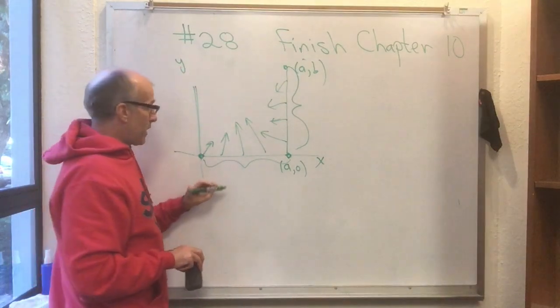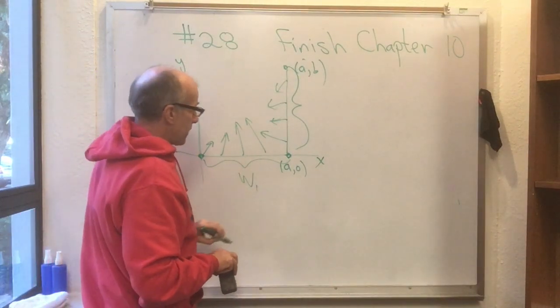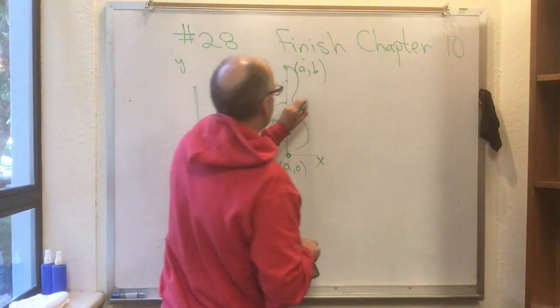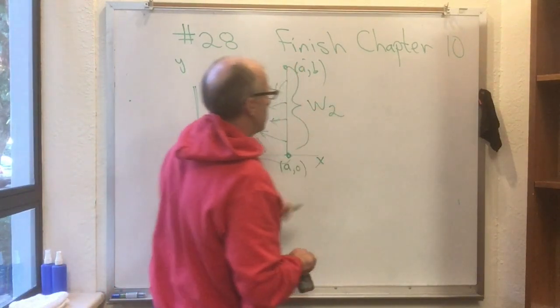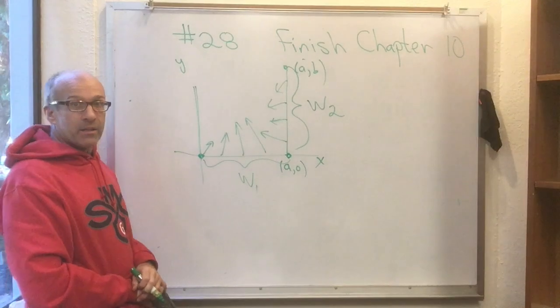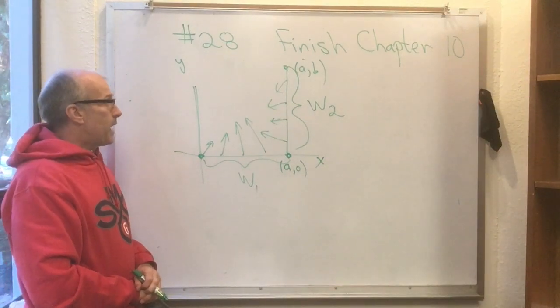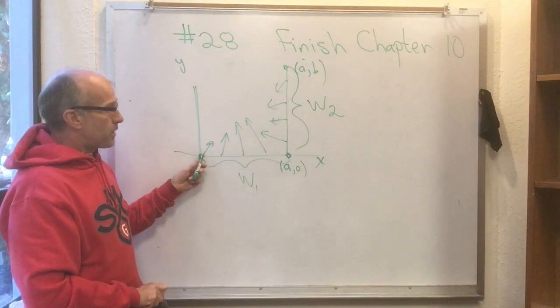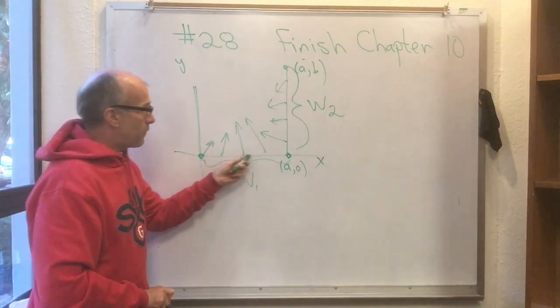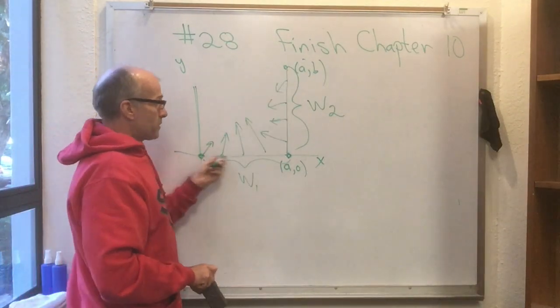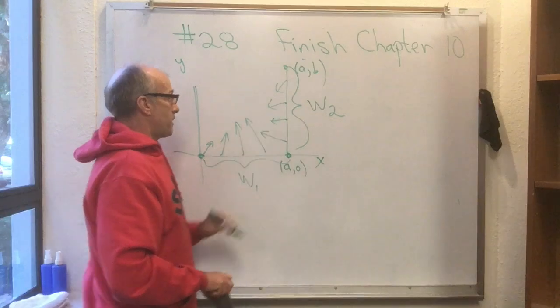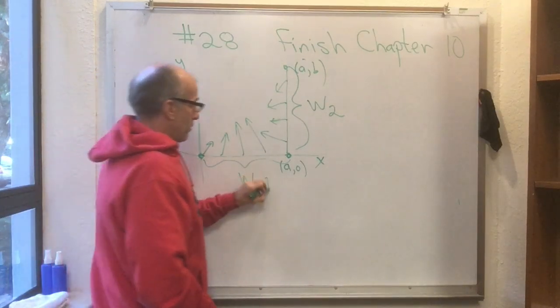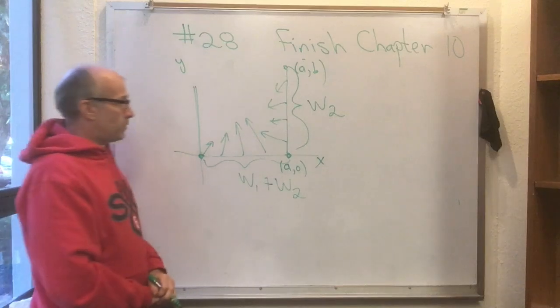And let's call the work that you calculate along this path, let's call that W1. And you could calculate the work along that path, you could call that W2. And then if someone said what's the total work done on the particle if it went from here to here by first going to here and then going to there, you'd say the total work done on the particle is W1 plus W2.